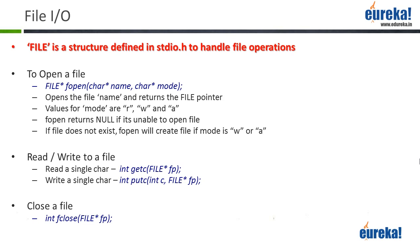The file name you pass can be an absolute path name or a relative path name. If the file is in the same folder as your program, you can just pass the file name as is. But if it's in some other folder, you may have to pass the absolute path name starting from C colon slash. If the file you specify does not exist or fopen is unable to open the file, fopen will return null. If you want to create a new file, call fopen with the mode of W - if the file does not exist, it will create and open the file ready for writing.